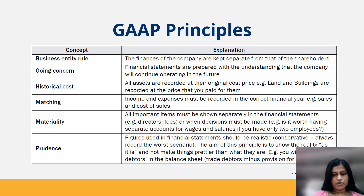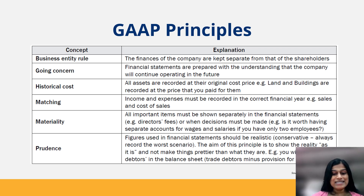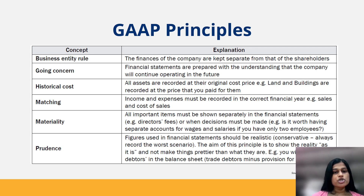The concept of prudence says that figures used in financial statements should be realistic. The aim of this principle is to show reality as it is and not make things look better than what they are. For example, you should not inflate your assets, nor should you understate your liabilities — you should show them for what they are.